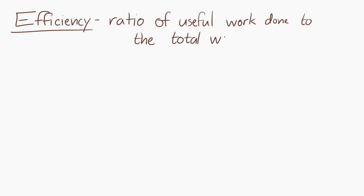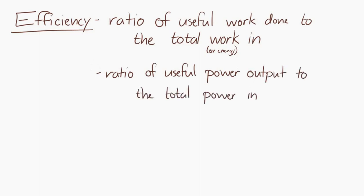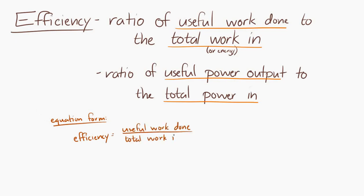Now let's look at efficiency. So efficiency is defined as the ratio of the useful work that's done, or that comes out, to the total work that went in, or the total amount of energy that went in. And you can also write it as a ratio of the powers. So it can also be said that it's the ratio of the useful power that comes out to the total power that went in. And we can write this as an equation, or as two equations actually, because it's a ratio.